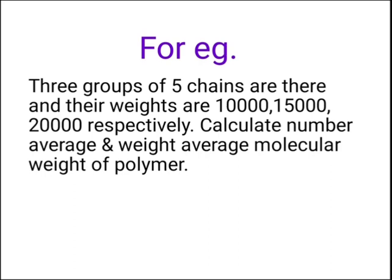Consider a general example. There are three groups of polymers and each group contains five chains. The three groups have molecular weights of 10,000, 15,000, and 20,000 respectively. From this data we want to calculate the number average and the weight average molecular weight of the polymer.